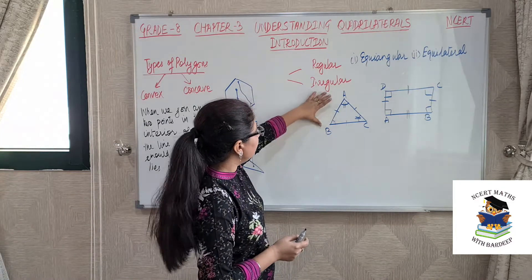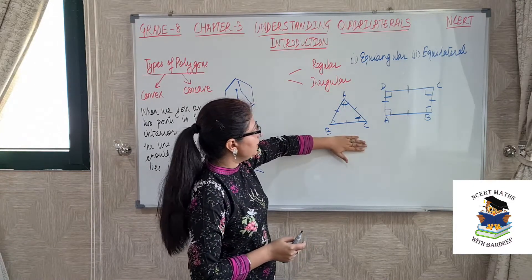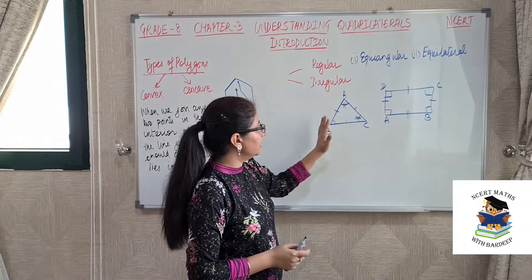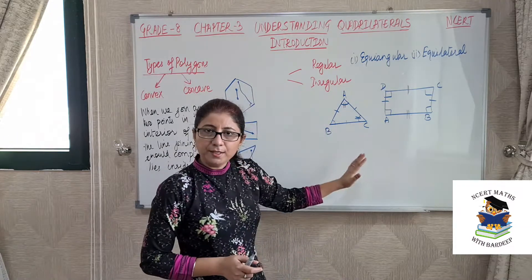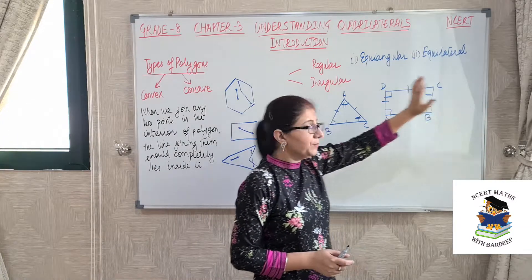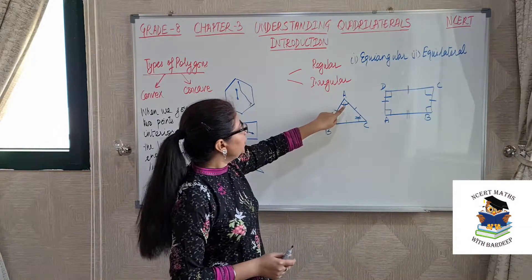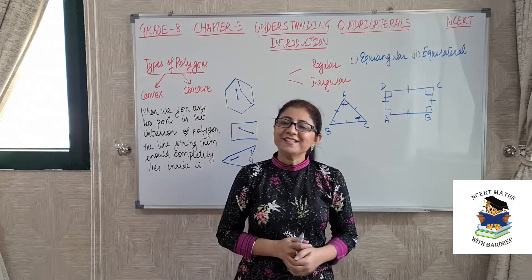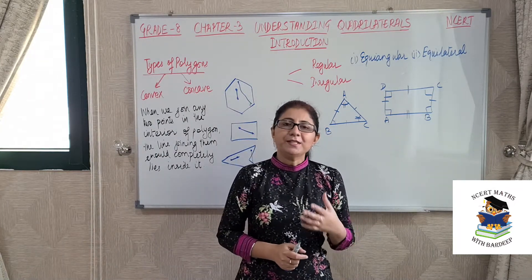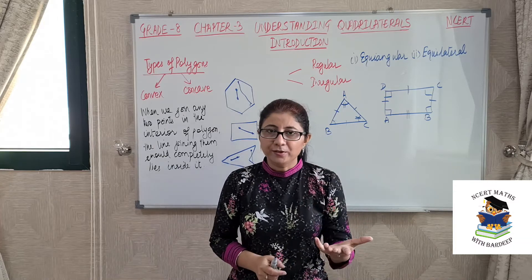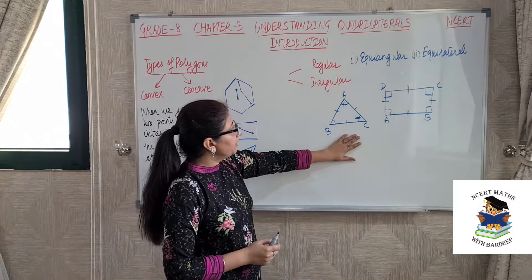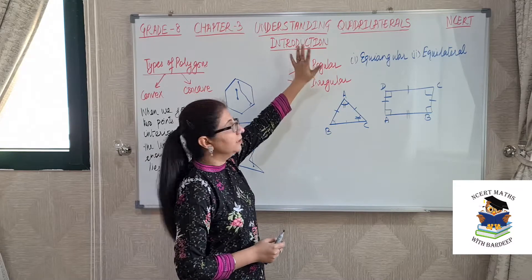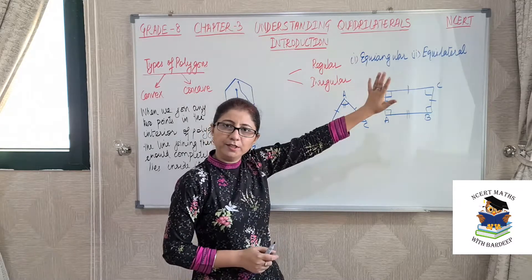So AB = AC = BC. Since all sides are of same length, this is equilateral. Second, we know that each angle of an equilateral triangle is 60 degrees, so this is equiangular also. Since both properties are true, the equilateral triangle is a regular polygon.